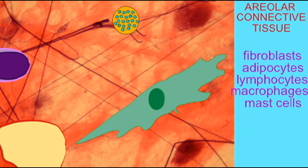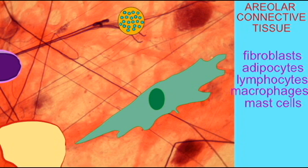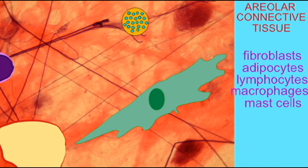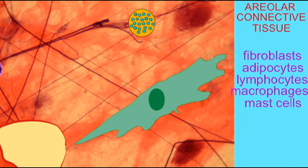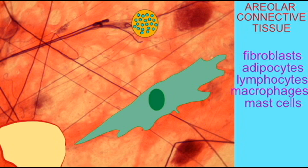Mast cells possess granules which, when released, promote inflammation. All of these cells are very different, and so connective tissues can be characterized by their specialized cells and the diversity of these cells in many connective tissues.